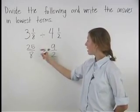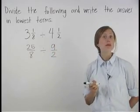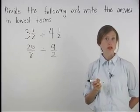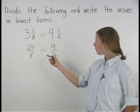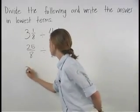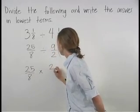So here, we have 25 eighths divided by 9 halves. Remember that dividing by a fraction is the same as multiplying by the reciprocal of that fraction. So here, 25 eighths divided by 9 halves is the same as 25 eighths times 2 ninths.